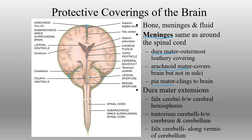The dura mater and arachnoid mater go on the outside of the brain; they do go down into the fissures but don't make their way into the sulci — they stay out on the surface. The pia mater, however, goes down into all of the little sulci, covering every little bit of brain, deep into all the different portions.